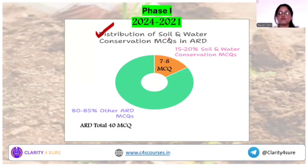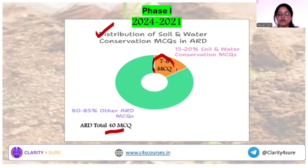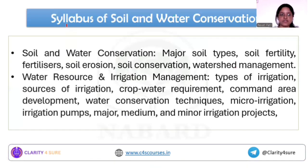After agronomy, this is the next major part of the syllabus. Out of 40 MCQs from the ARD merit section, you can expect around 7-8 MCQs from this part of the syllabus. So yes, after agronomy, this is the next major part of the syllabus.